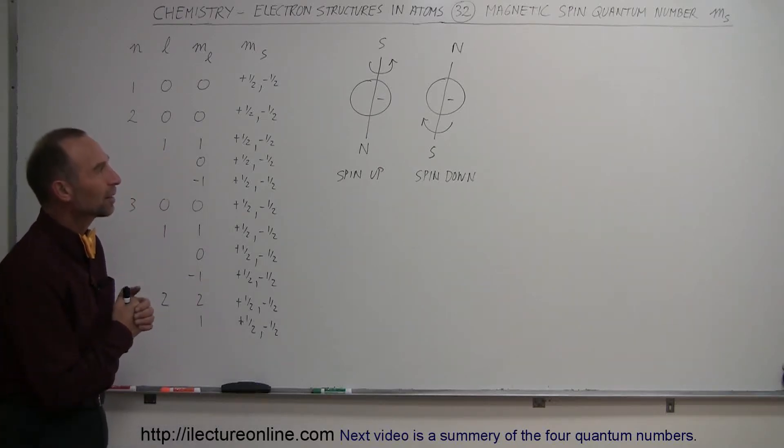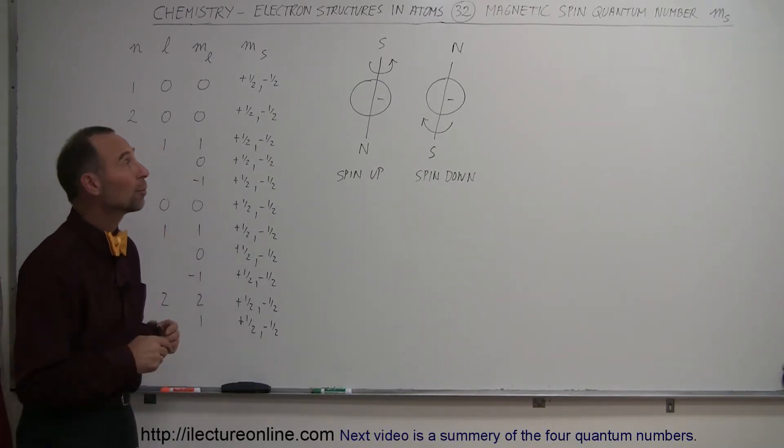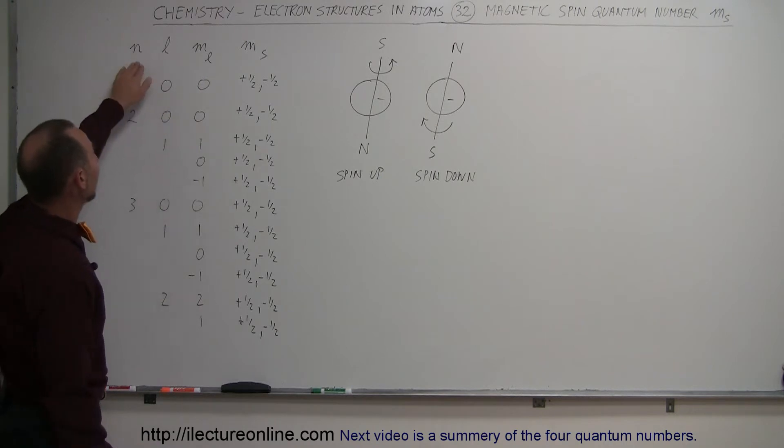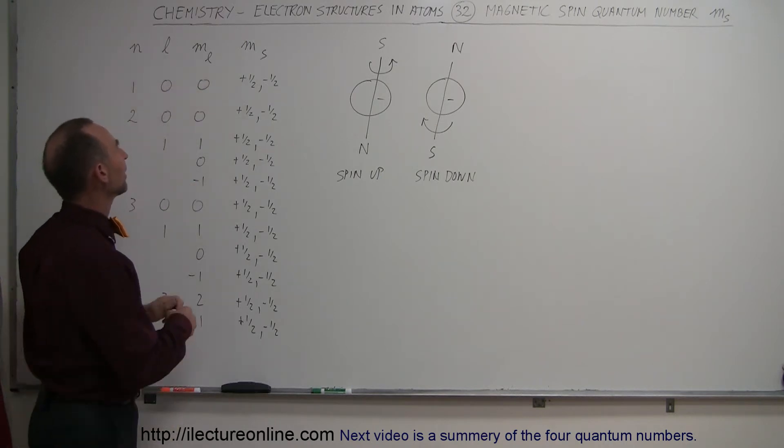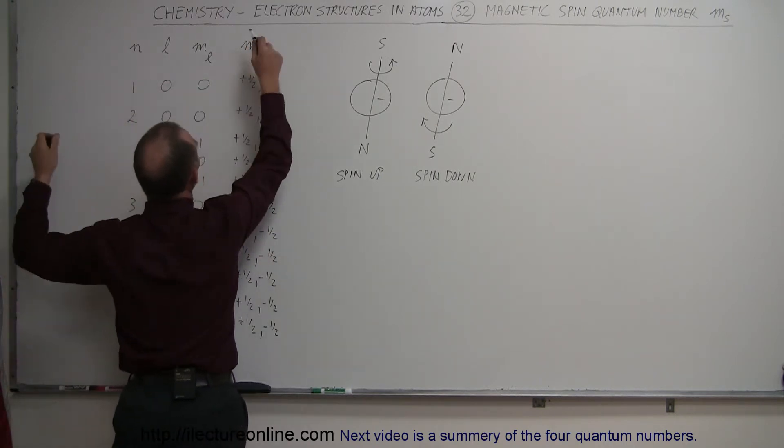In our next video, we're going to talk about the magnetic spin quantum number. Remember, there are four quantum numbers: N, L, M sub L, and finally the fourth one, M sub S.